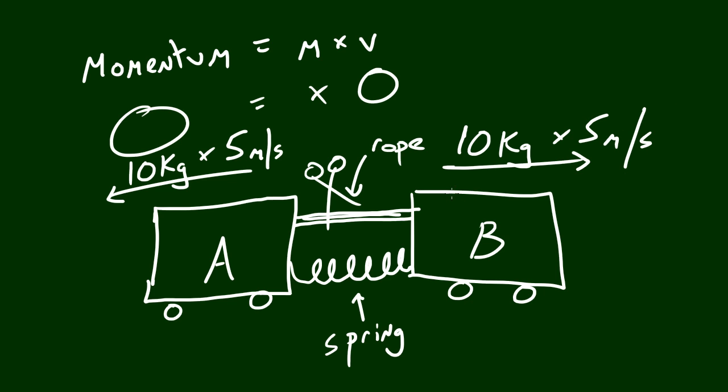Now check this out. The momentum of cart A is equal to the momentum of cart B. The only thing is that it's in an opposite direction. Of course, if we figured out the momentum of this it would be 50, and if we figured out the momentum of cart B it would also be 50. But even though they have the same momentum, they are moving in opposite directions. So the total momentum of the entire system as a whole is still zero.